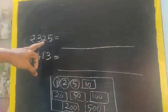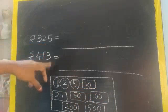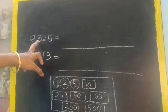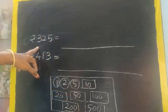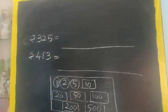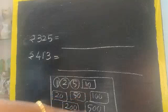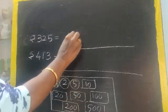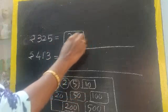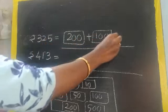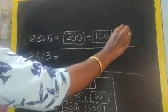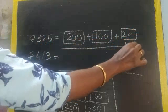Now check out rupees 325, 413. First of all expand. 300 plus 20 plus 5. Do we have 300 rupee note? No. So how will you write? Yes, 200 plus 100. 2 plus 1 is 3, right? So 200 plus 100, 20 plus 5. We have 20 rupee note plus 5 rupee coin.